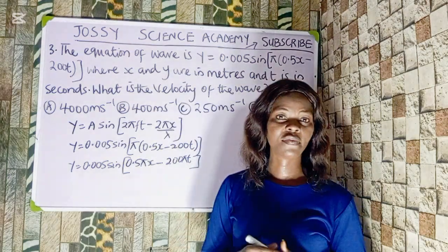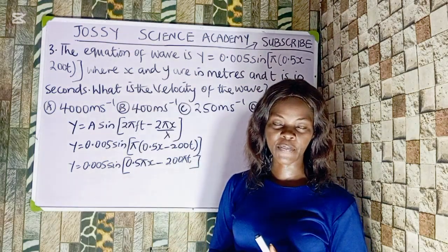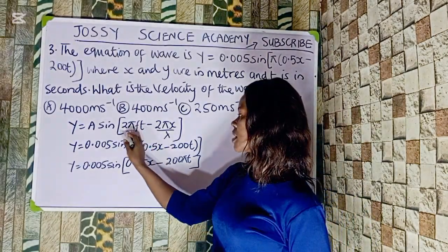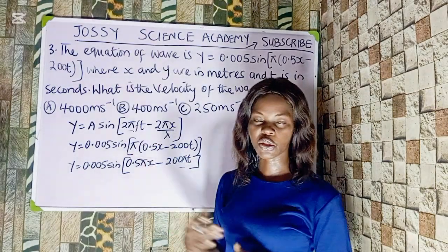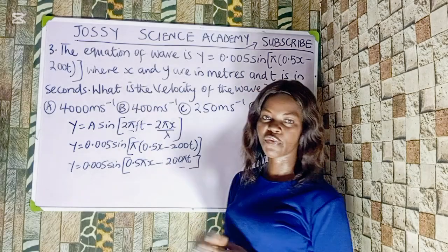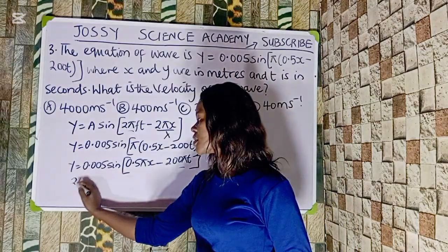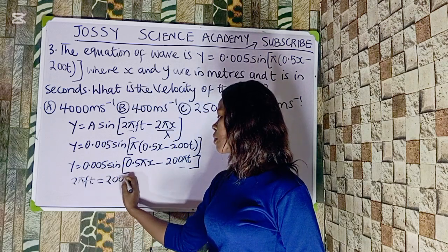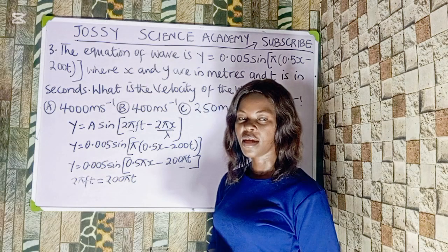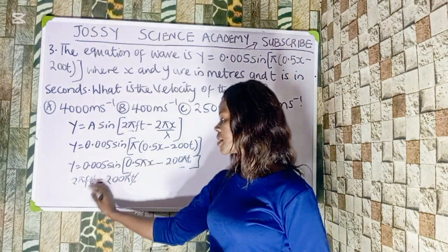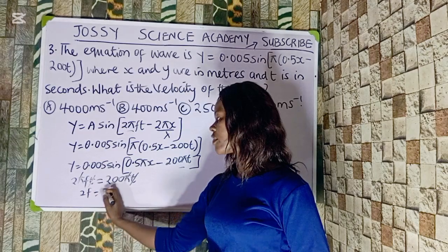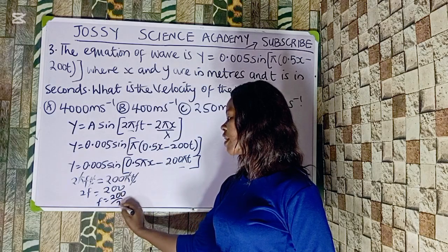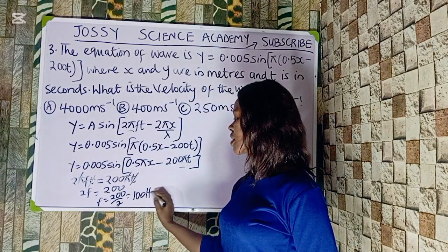For us to get the velocity of the wave, we first get the frequency. We equate the time term: 2πft equals 200πt. Pi t cancels pi t, so 2f equals 200, giving frequency f equals 100 hertz.